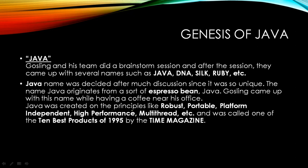Gosling and his team held a brainstorm session and came up with several names such as JAVA, DNA, Silk, Ruby, etc. The name JAVA was decided after much discussion since it was so unique. The name Java originates from a sort of espresso bean — in other words, coffee. Gosling came up with this name while having a coffee near his office.